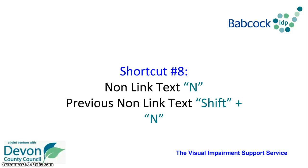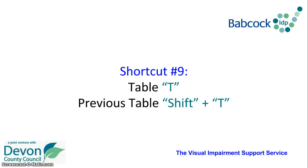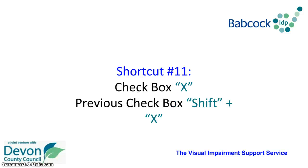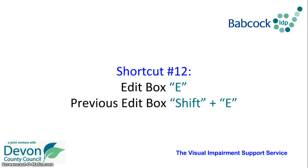Non-linked text you can get to by pressing N, and previous non-linked text is Shift and N. To get to the next table press T, and the previous table is Shift and T. To get to the next button on the page press B, and the previous button is Shift and B. To find the next check box press X, and to find the previous check box press Shift and X. To find the next edit box press E, and to find the previous edit box press Shift and E.